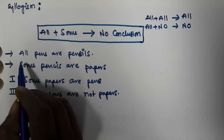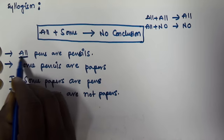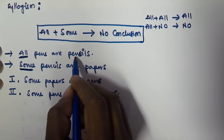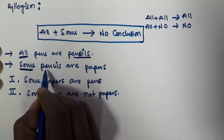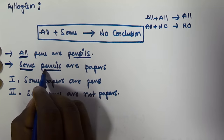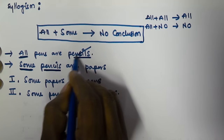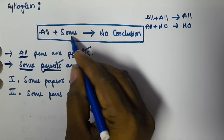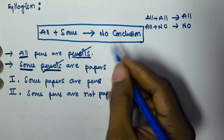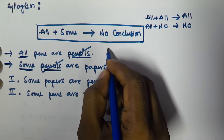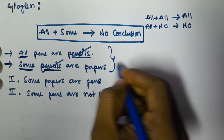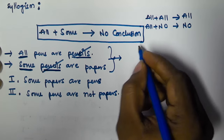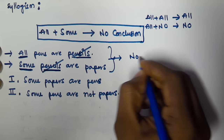Here the first syllogism starts with 'all' and the second syllogism starts with 'some.' The predicate of the first syllogism is equal to the subject of the second syllogism, so you can cancel these two. But according to the rule, all plus some will give no conclusion.